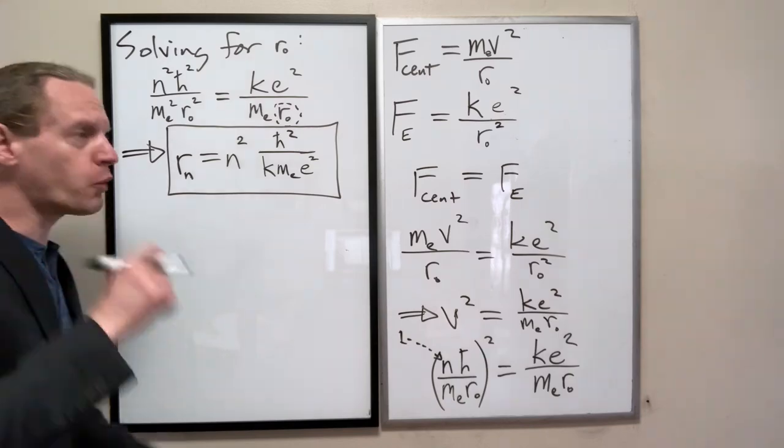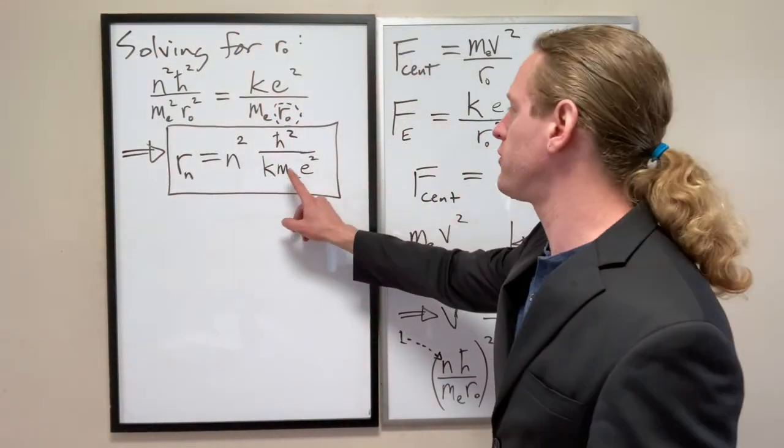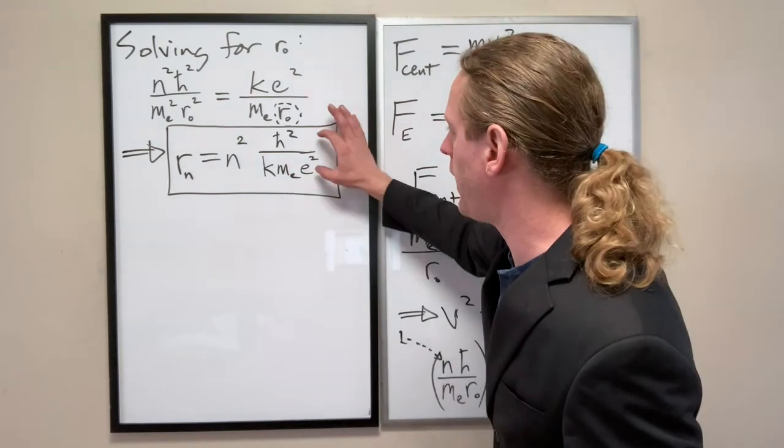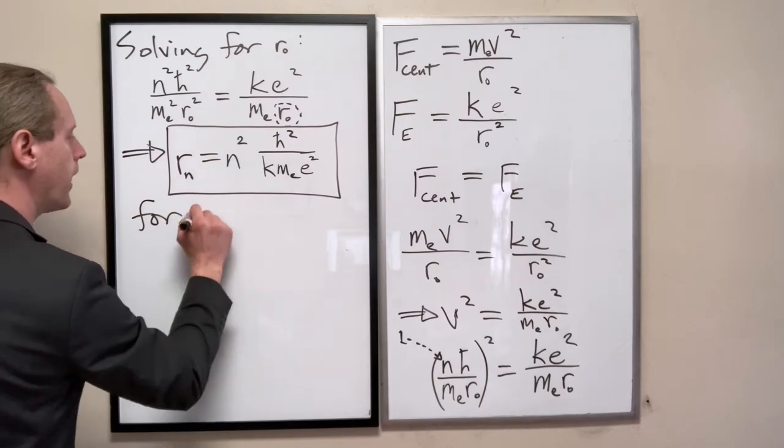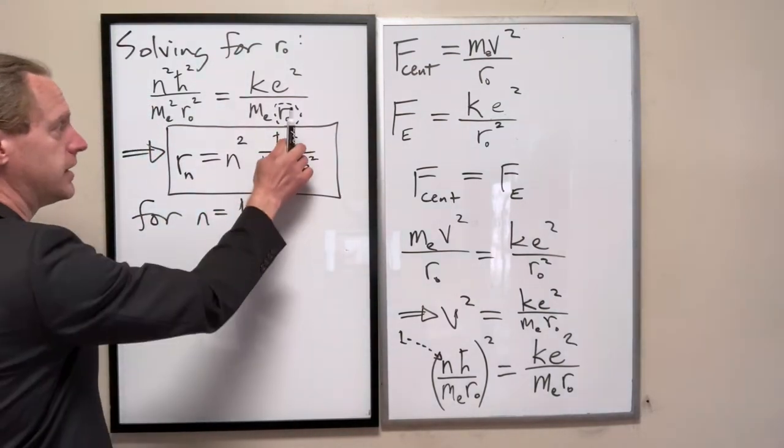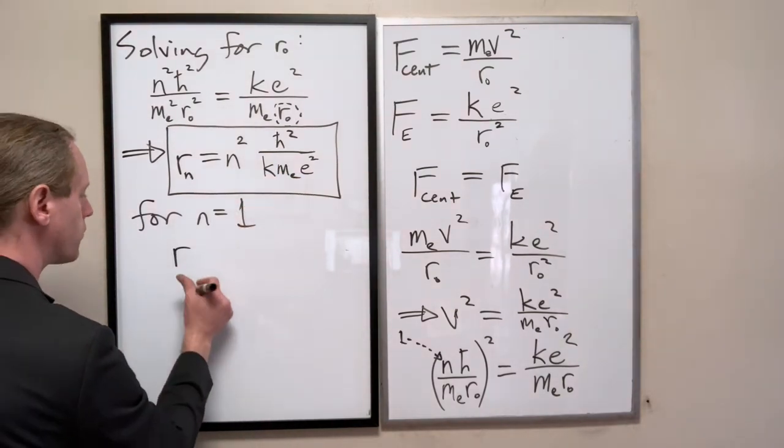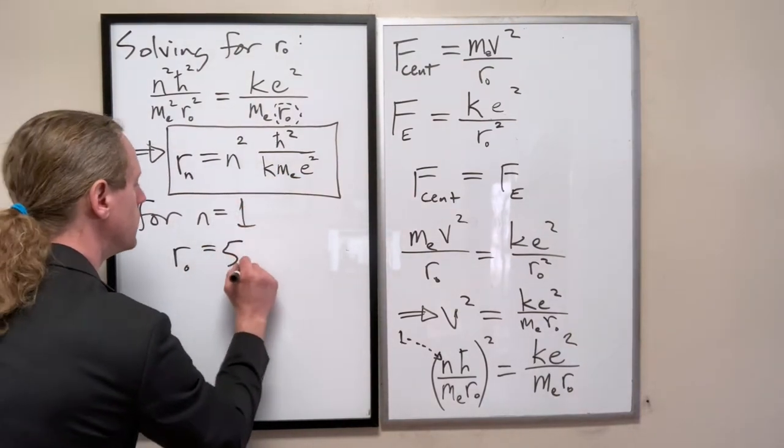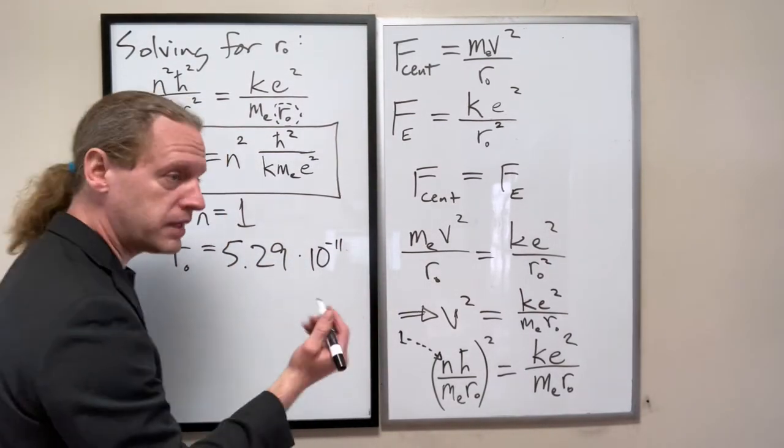You absolutely should look up these numbers, and you absolutely should plug in these to find the actual value here. For N equal to 1, when you do the calculation, you set these equal to their appropriate values. What you find is that R sub 0 is 5.29 times 10 to the minus 11 meters.